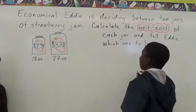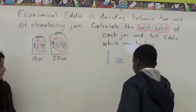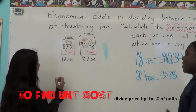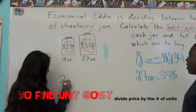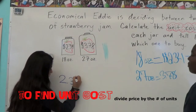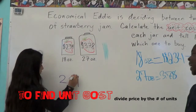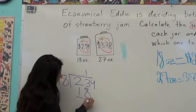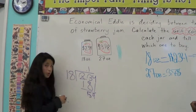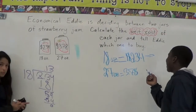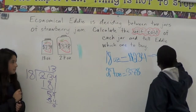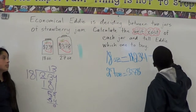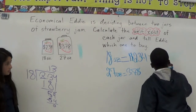So, this is how I do it. The problem is $3.34 divided by 18. For the 18-ounce jar, we get $0.13 per ounce.